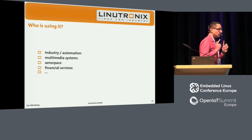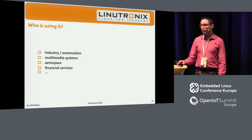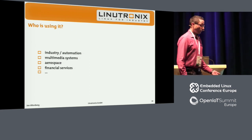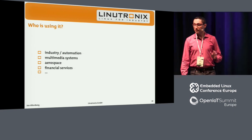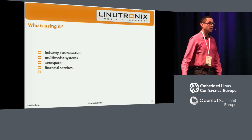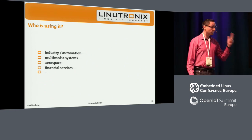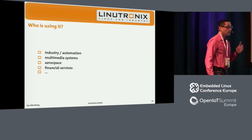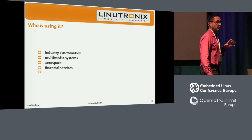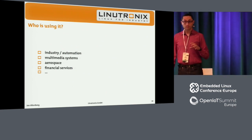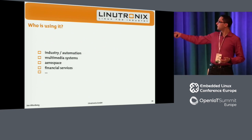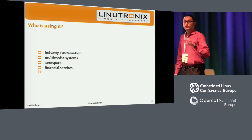When you get into a new technology, you want to check who else is using it. For real-time Linux, we actually have many users already. We have industrial applications, the automation industry, automotive industry, multimedia systems, aerospace systems in non-safety-critical applications, and even financial services — running on big server machines for high-speed trading. These guys need a real-time operating system and are using real-time Linux.